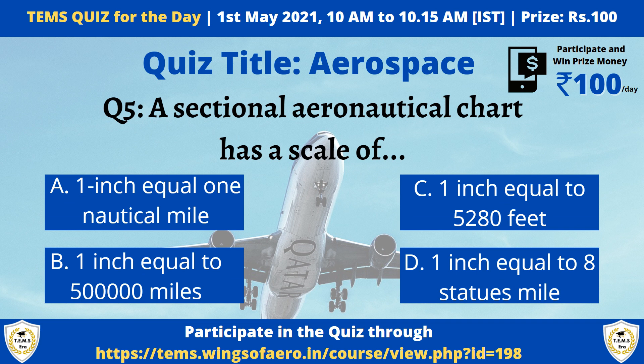Question 5: A sectional aeronautical chart has a scale of — Option A: 1 inch equals 1 nautical mile. Option B: 1 inch equals 5 lakh miles. Option C: 1 inch equals 5,280 feet. Option D: 1 inch equals 8 statute miles. The answers to all questions will be available at the end of the session in the description of this video. If you wish to participate, login to temps.wingsofarro w.in and win rupees 100.